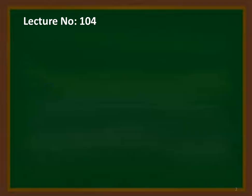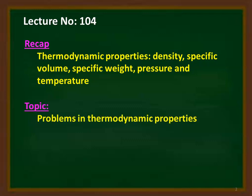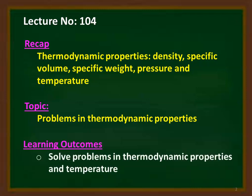This is lecture number 4 on module 1. We recap from the previous lectures. In the previous three lectures, we studied about thermodynamic properties, thermodynamic system, and quasi-static process. Particularly, we defined density, specific volume, specific weight, pressure, and temperature. In this lecture, we solve a few problems on thermodynamic properties to get familiarity with the equations. The learning outcome: at the end of the lecture, the student will be able to solve problems on thermodynamic properties and temperature.